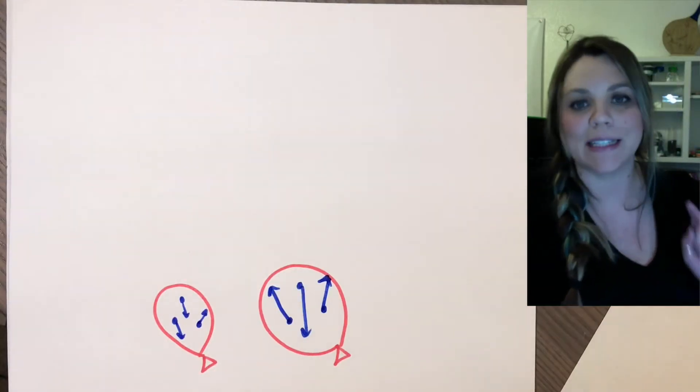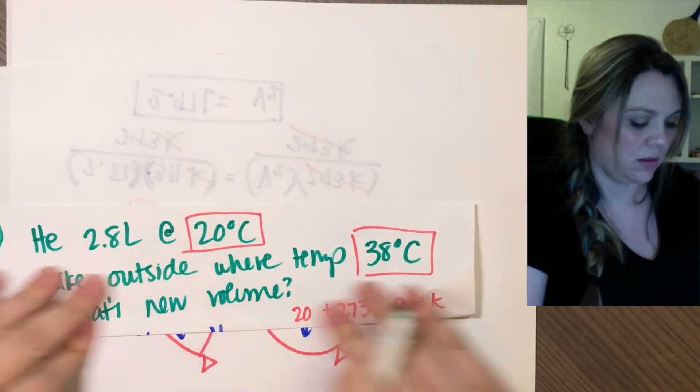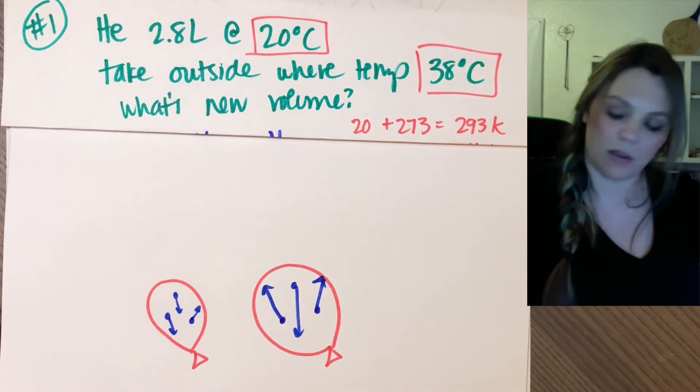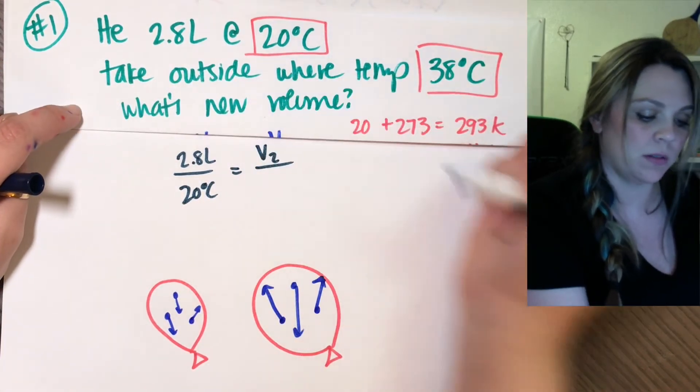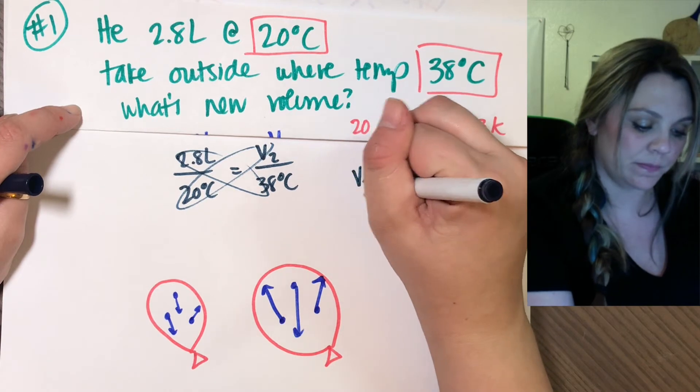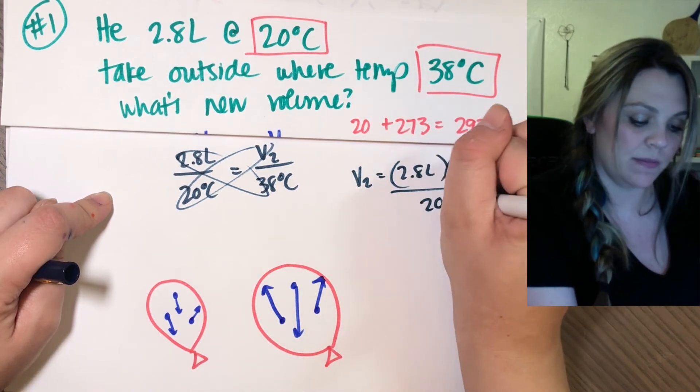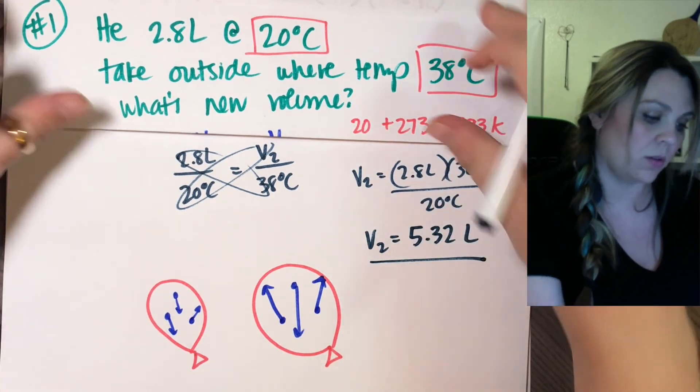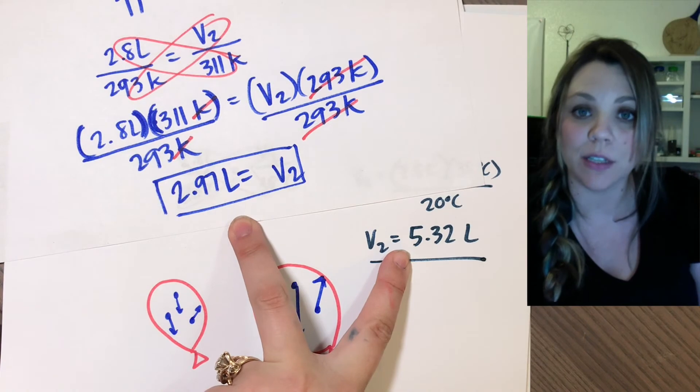Just real quick I want to make sure that you understand - if I did not switch to kelvin, if I screwed up, if I totally forgot and left it in Celsius and I said 2.8 liters divided by 20 degrees Celsius equals V2 divided by 38 degrees Celsius and I did the same thing and solved for V2, 2.8 times 38 divided by 20, I would get that V2 is equal to 5.32 liters when in reality I should get 2.97 liters. This is vastly different and super wrong.